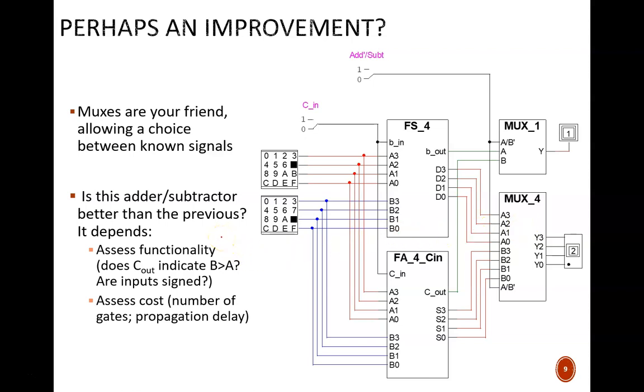That's not such a simple question to answer. The first thing to do is to assess what functionality you need for a given application. For example, are you calculating with only unsigned numbers? And do you care about a borrow bit always indicating whether B is greater than A? If both circuits provide the functionality you need, then consider the cost, which generally comes down to two things: the number of gates needed and the overall propagation delay.